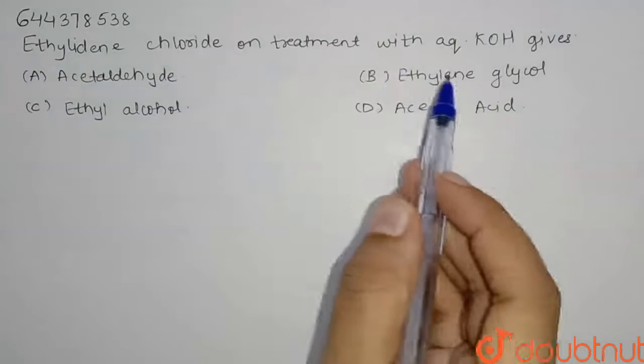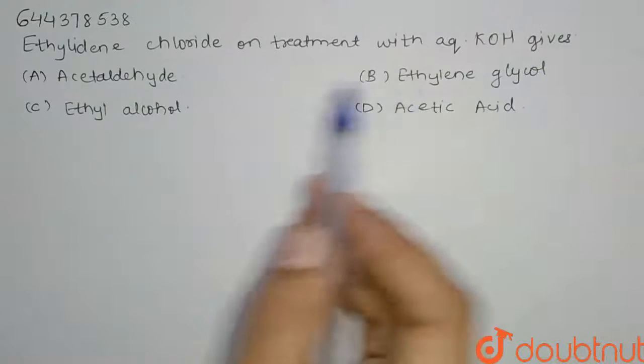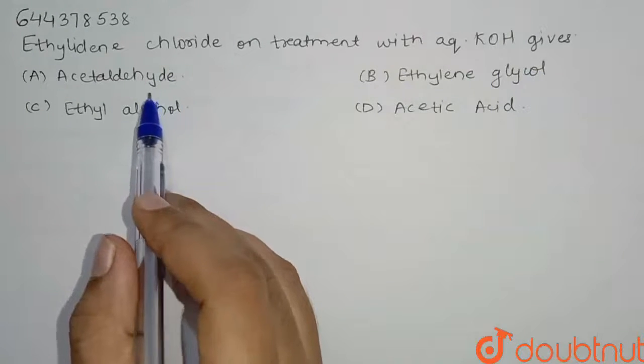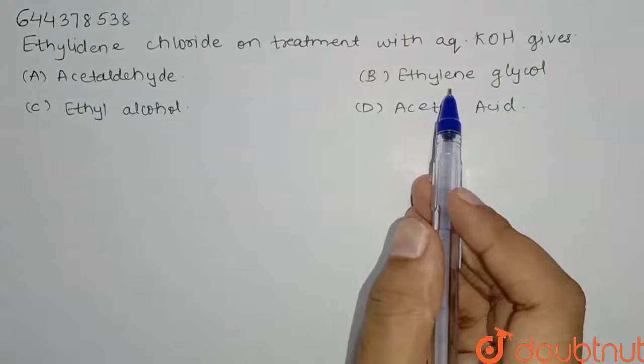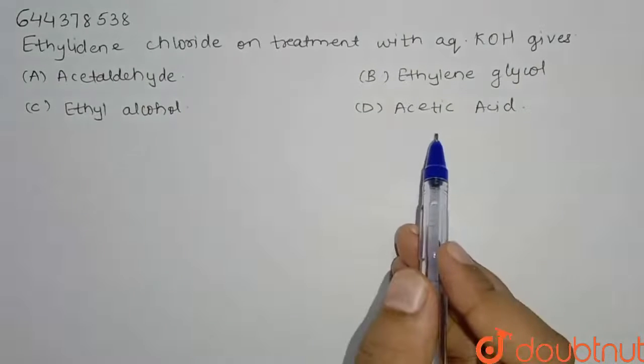Hello everyone. The question is: ethylene dichloride on treatment with aqueous KOH gives — and we have four options: acetaldehyde, ethylene glycol, ethyl alcohol, and acetic acid.